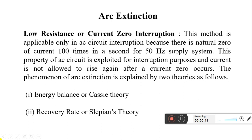In this lecture we will discuss the arc extension method with the low resistance or current zero interruption. In the previous class we discussed how the arc is formed between the contacts of the circuit breaker and how it is dangerous to the circuit breaker and personnel. It is necessary that while circuit breakers are carrying current, we must extinguish the arc as early as possible. Previously we discussed the high resistance method; today we discuss the low resistance or current zero interruption method.